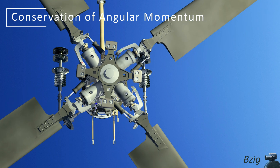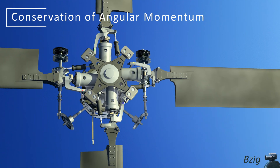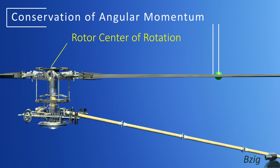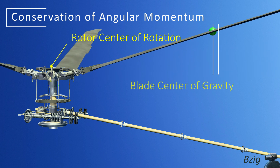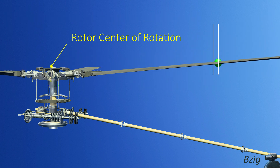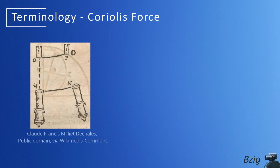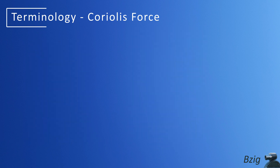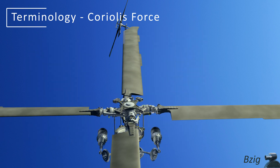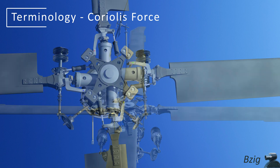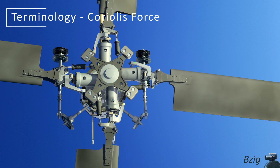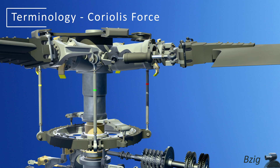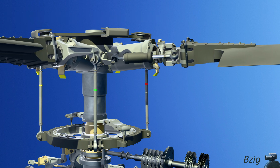In any rotating system, changes in mass distribution cause changes in rotational forces. These forces are created because the moment of inertia changes when the center of gravity moves relative to the center of rotation. There's a name for the force that results from the change in moment of inertia — it's called the Coriolis force, named after the French mathematician who first wrote the equation for this force when he was studying water wheels. So if your flight instructor asks you why rotor blades have a lead lag hinge, you could say it's because of Coriolis force or because of the conservation of angular momentum — they both refer to the same thing and are both correct answers.